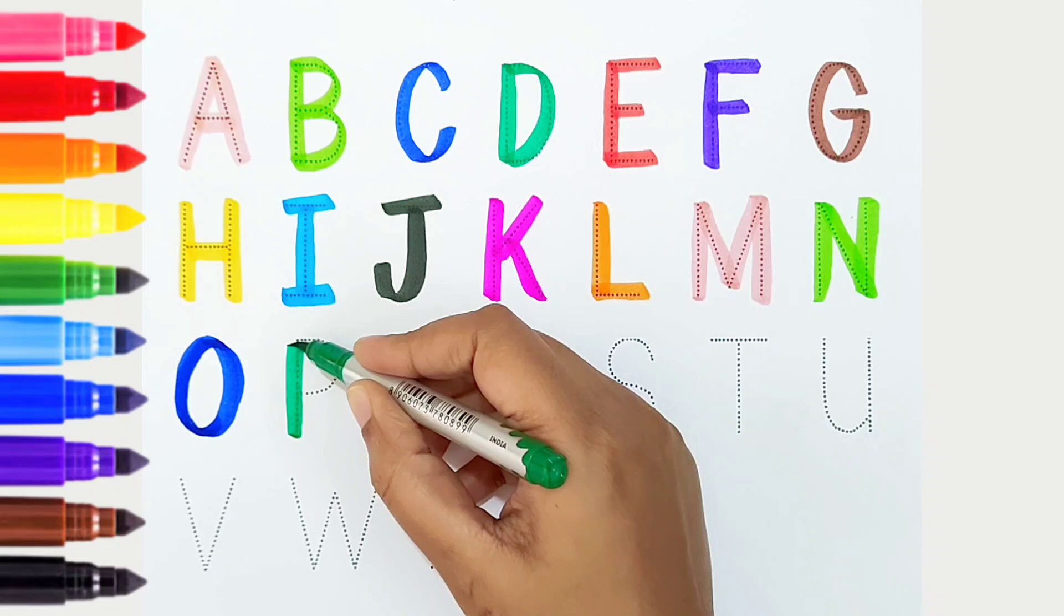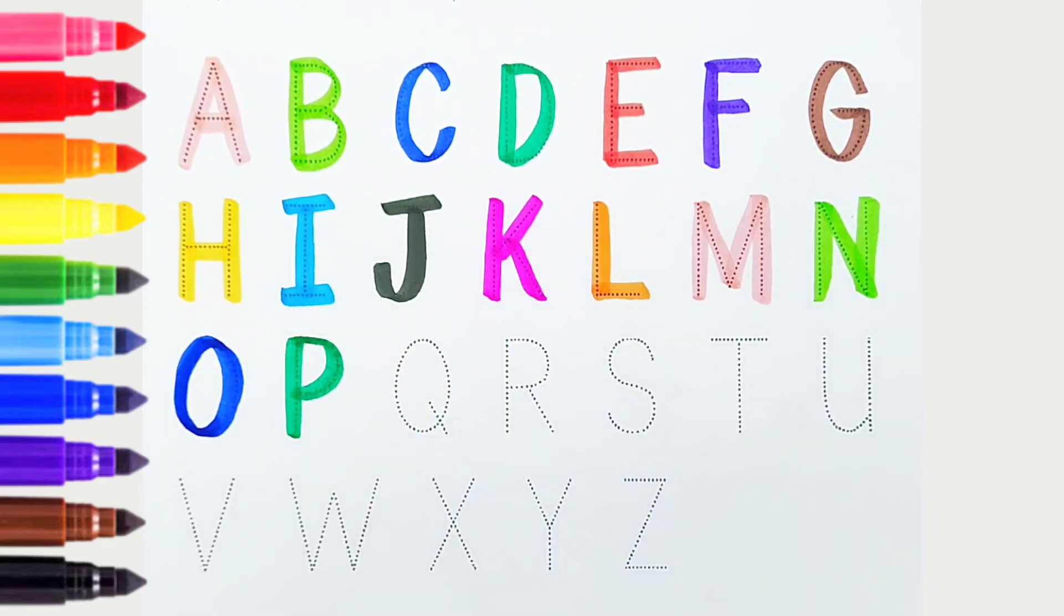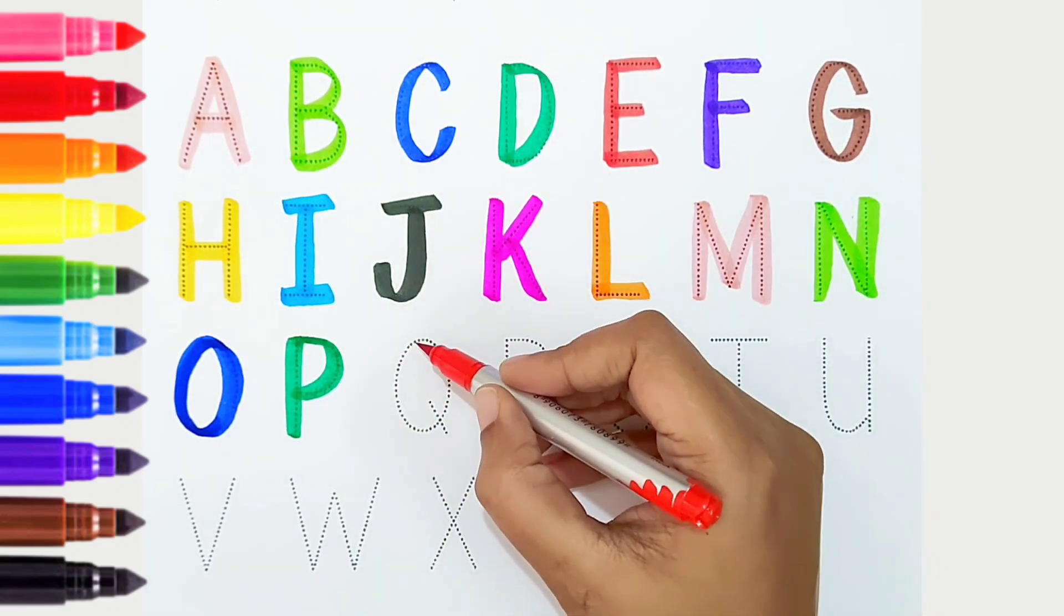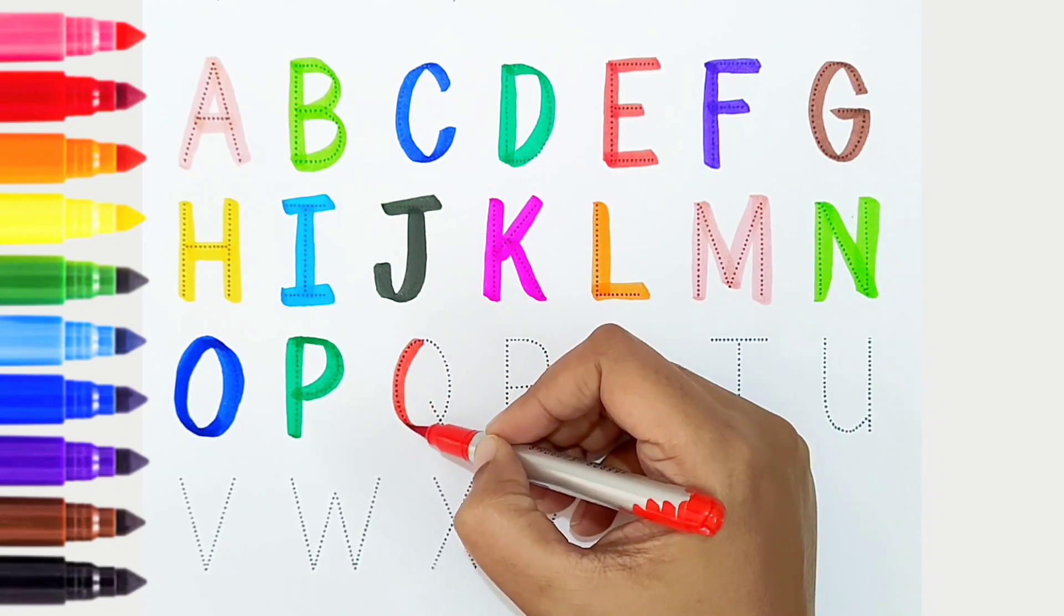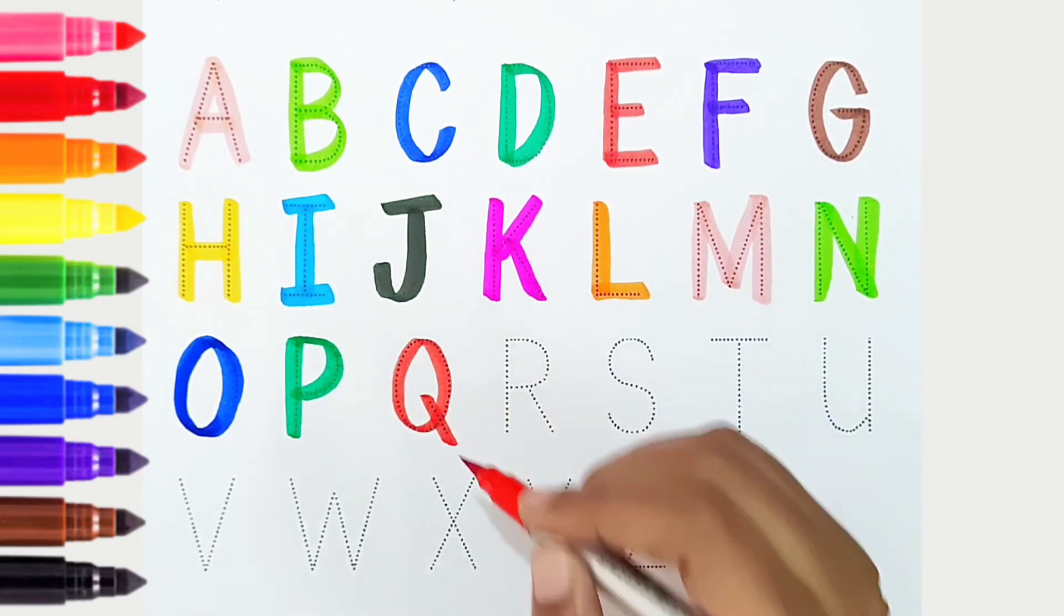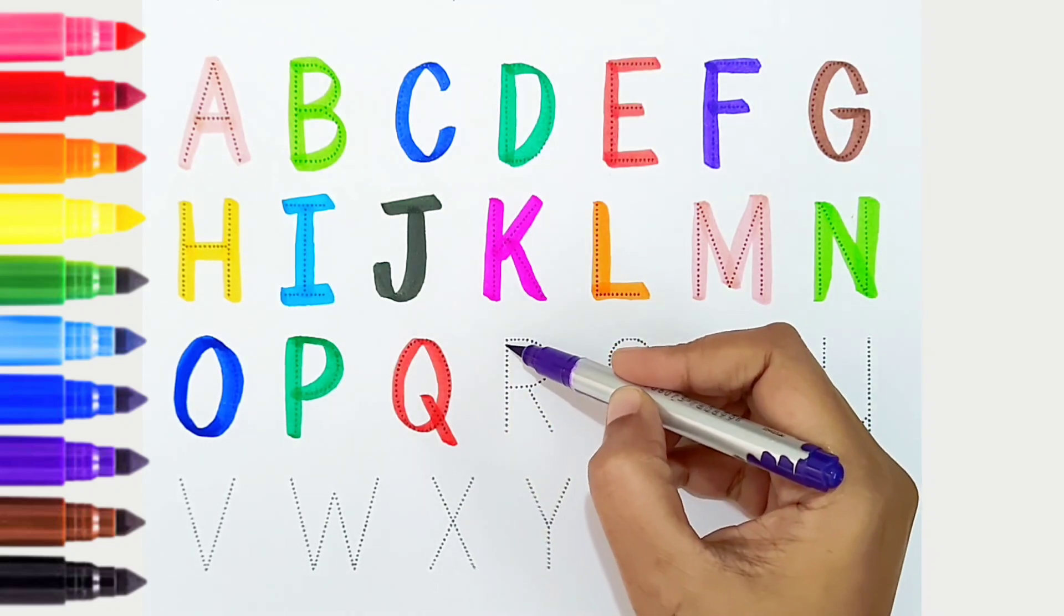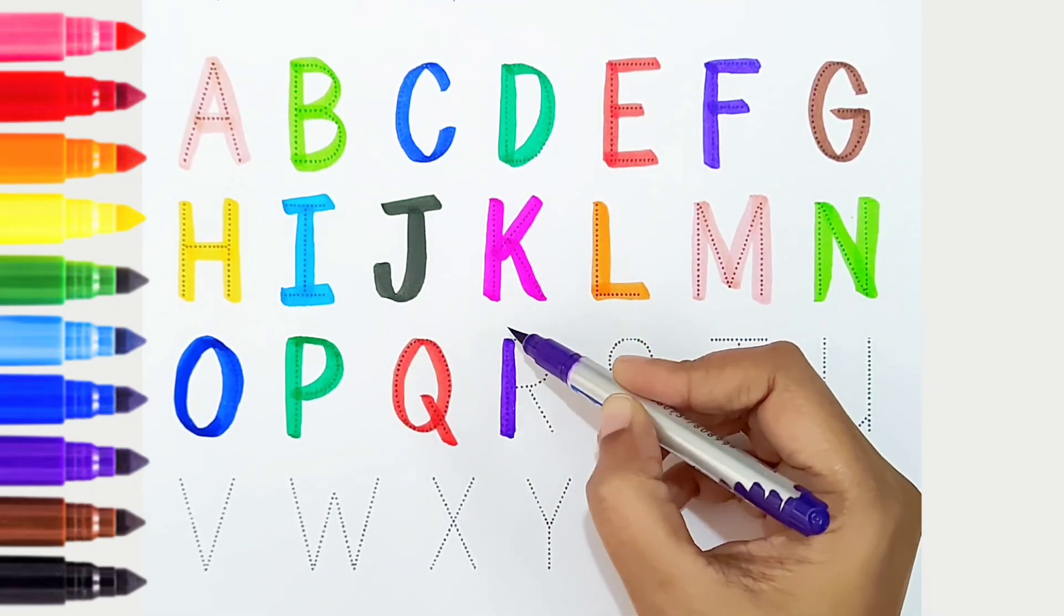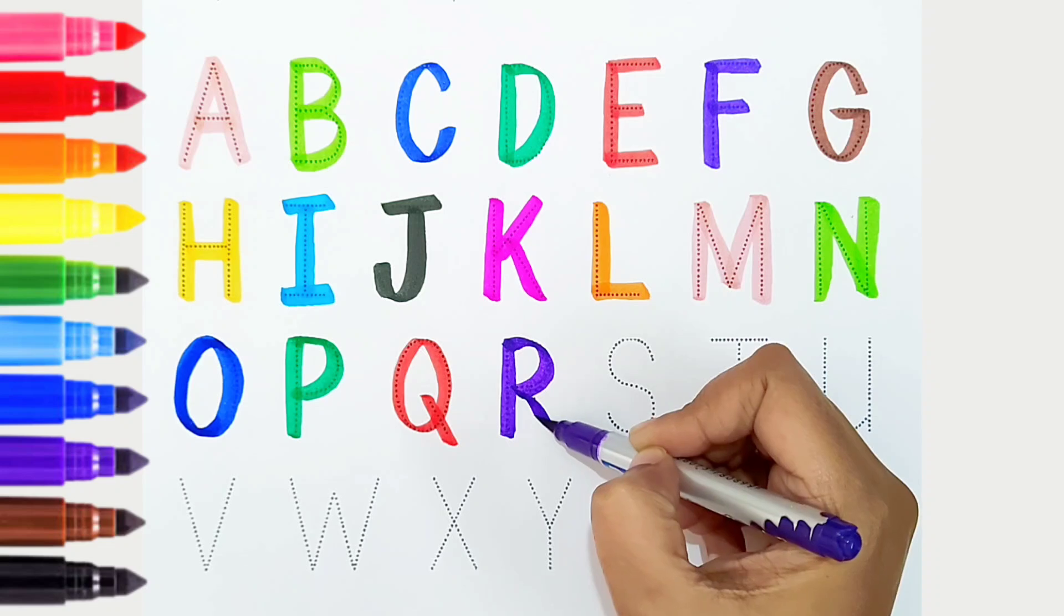P, dark green color. P is for pen. Q, red color. Q is for quilt. R, violet color. R is for rabbit.